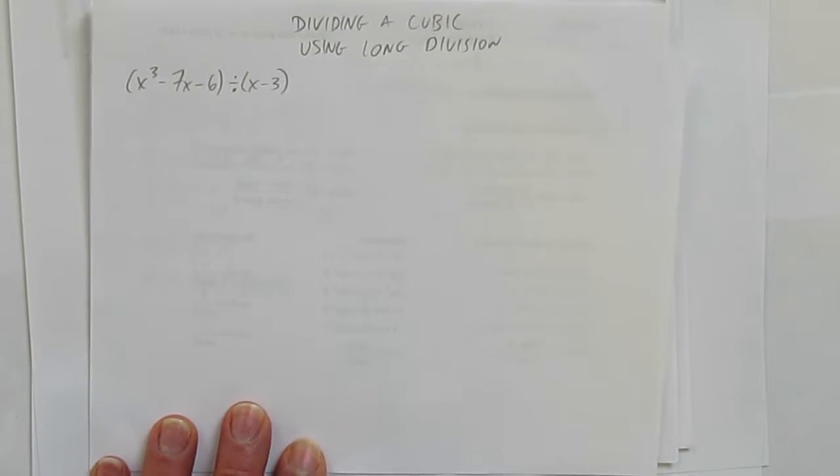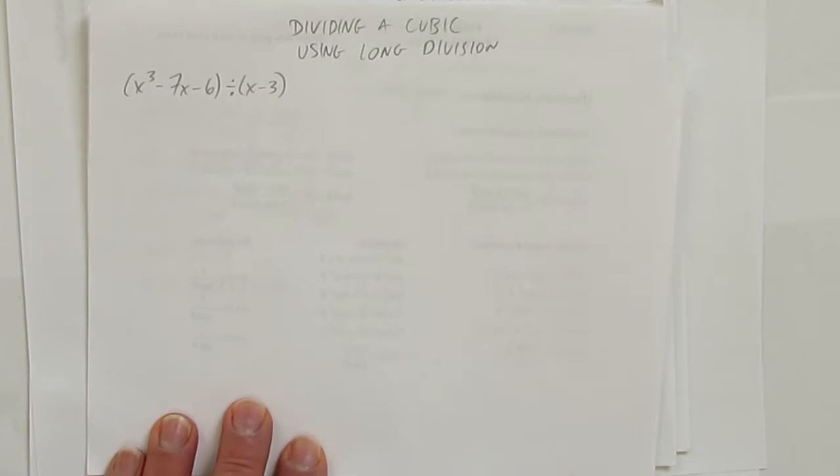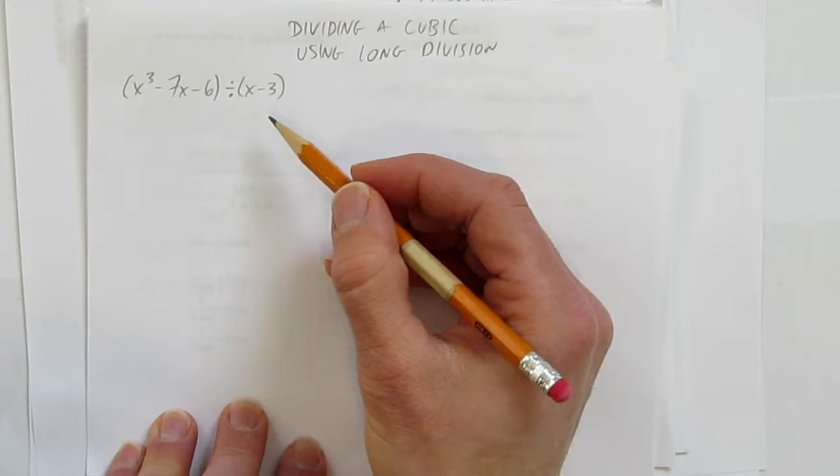In this video, we'll look at how to divide a cubic using long division. The cubic given is x³ - 7x - 6, and we're dividing it by x - 3.